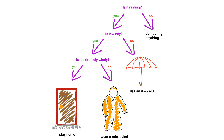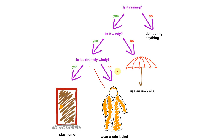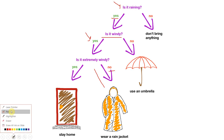Decision trees can be read and understood easily and clearly. For example, if the decision is the yellow one — to wear a rain jacket — we can read it from the decision tree. I wear a rain jacket because it is not extremely windy, but it is windy, and it is raining. Decision trees, as seen, are explainable algorithms, and this is very important in machine learning.